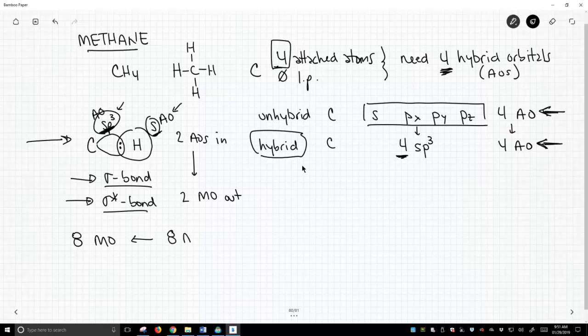Where do those eight orbitals come from? Well, they came from eight atomic orbitals. Those eight atomic orbitals were our four SP3 hybrids on carbon. And we had an S orbital on each of our four hydrogens. So we had four S's and four SP3s, and that's how we got our eight atomic orbitals.